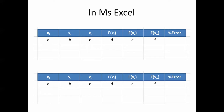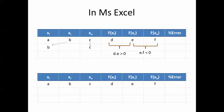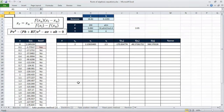To implement this in Excel, it's essentially the same as before. The only difference is how xr is calculated — instead of the midpoint average, you use the false position equation from the earlier slides. You compute the product of the two function values to apply the sign-change condition, then assign the new xr accordingly. It's straightforward, so let's go to Excel and see how it works.